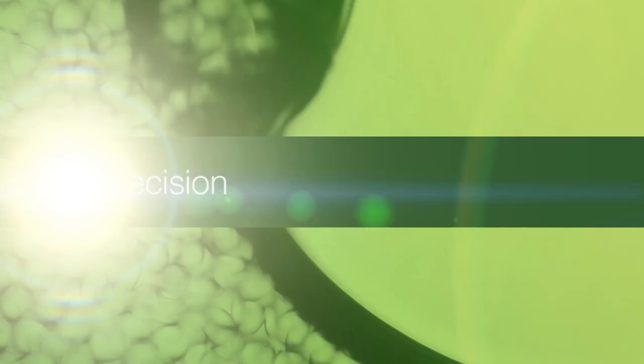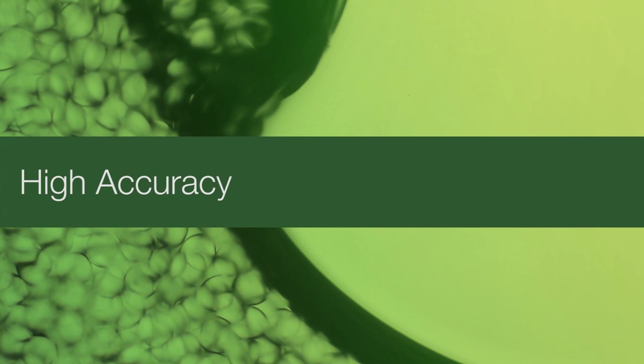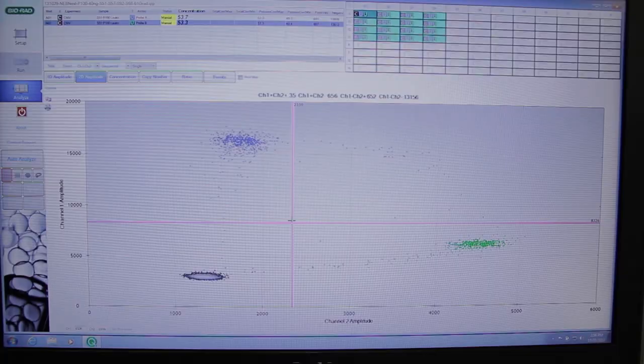With Droplet Digital PCR, when you're doing 20,000 PCRs instead of 10, you now have increased the radar screen to let us know more information and more accurate information than we could before.